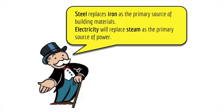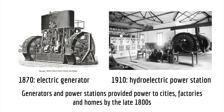Now we're going to begin to replace our power source. The steam engine was our power source for pretty much everything, but as we get into the late 1800s, electricity is going to take over. By the 1870s, we're going to see our first electric generator being developed, which generates electricity that can be wired into homes or places of business. By 1910, we see the first hydroelectric power station using the movement of water and turbines to generate power. These power stations and generators pop up everywhere to wire buildings and factories for electricity.